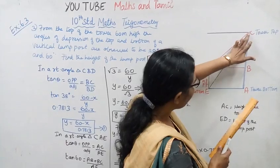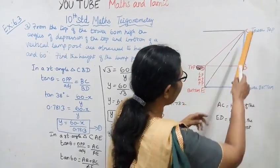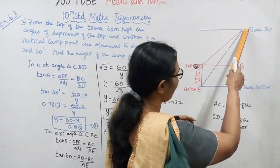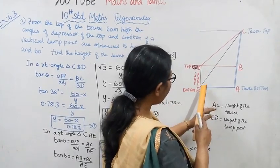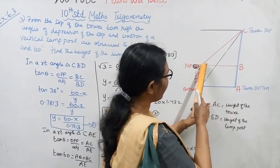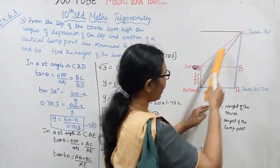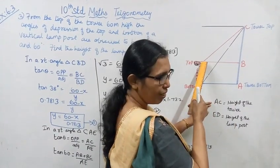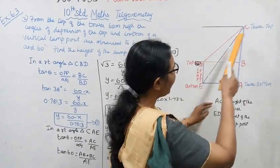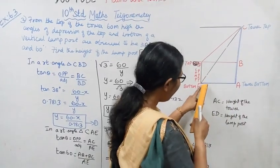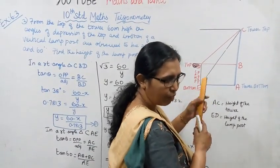This is the tower. From the top of the tower to the top of the lamp post, that is the angle of depression. From the top of the tower to the bottom of the lamp post, that is also the angle of depression.